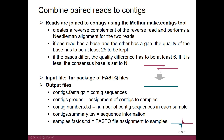If both reads have bases but they don't agree, then the quality difference has to be at least 6. If the base quality difference is less, then the consensus base is set to N.